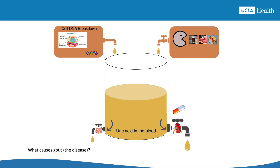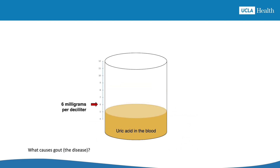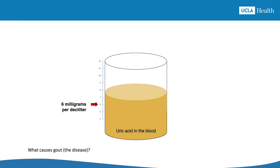Having a high uric acid level by itself isn't gout though. Gout happens when a high uric acid level causes uric acid crystals to start forming. The number to remember is a uric acid level of 6 mg per deciliter — you can find this out with a blood test. If the level stays below 6 mg/dL, uric acid crystals can't form and there are no gout attacks. If it rises and stays above 6, your body will start making crystals. The higher the level, the more likely you are to form them, and your body keeps making crystals as long as uric acid stays high.